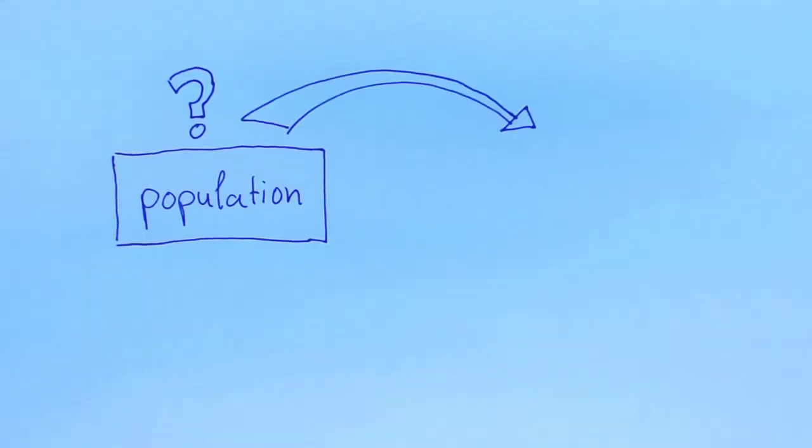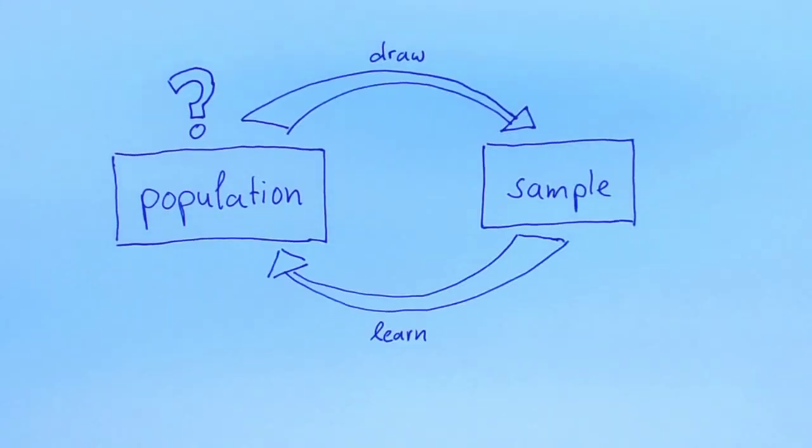We learn about a population by looking at a sample from the population. Sampling once from the population is like taking one brief probabilistic peak at the population. To learn the rules of the population with precision, we ideally want to take more than one look at the population. In other words, we want to draw a sample of size greater than one. We may draw ten times from the population, or a hundred times, or a thousand times. The size of the sample is denoted by n.